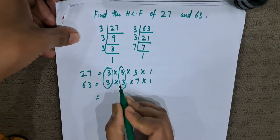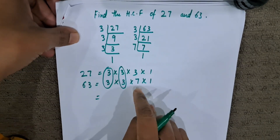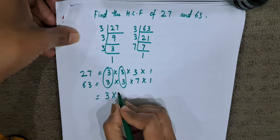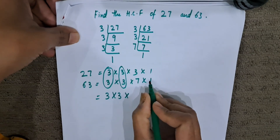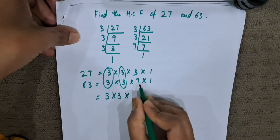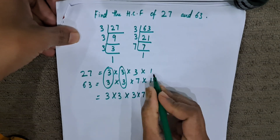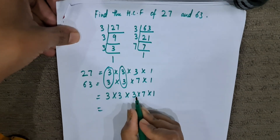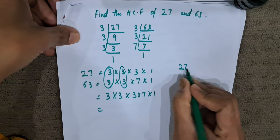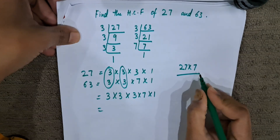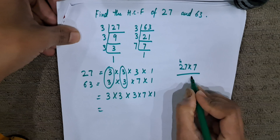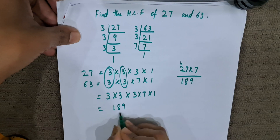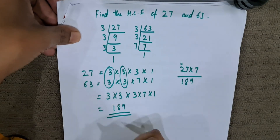Now what we will do — which are common, we will write only once. The ones which are not common, we will write all of them. Among these 2, 3 is common. Among these 2, 3 is common. The rest, nothing is common, but we have to write down all of them. So 3 into 3 into 3 into 7 into 1. 3 threes are 9, 9 threes are 27. 27 into 7 is 189. So 189 is the HCF of 27 and 63.